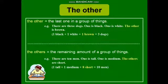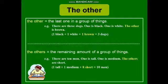Now we have the singular form and plural form of other. The other is used with the last one in a group. For example, there are three dogs — one is black, one is white, the other is brown. So you are talking about the last one. We use the singular form, the other. Now, the remaining amount — not only one, but the remaining amount of a group of things.